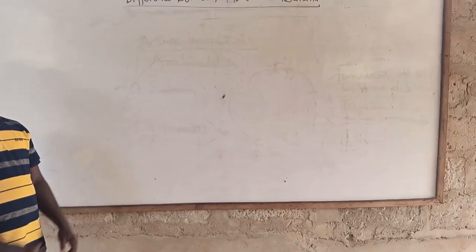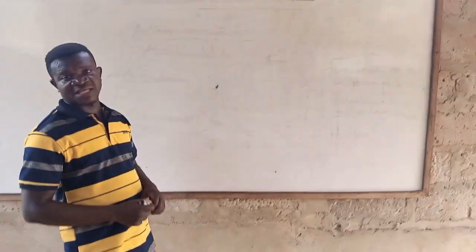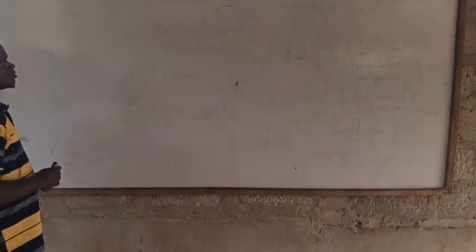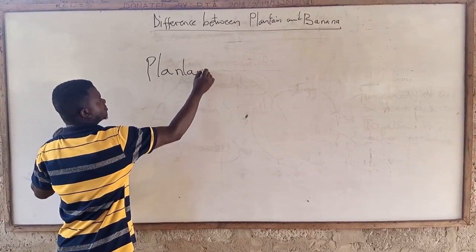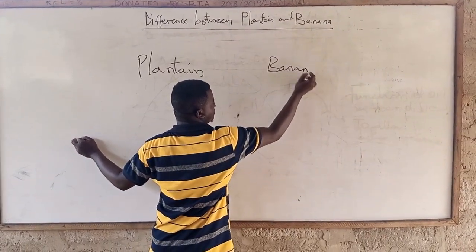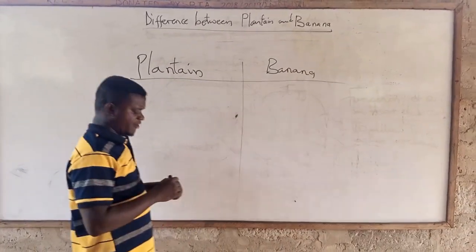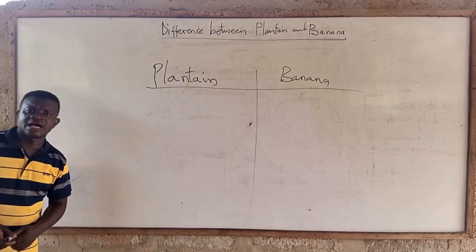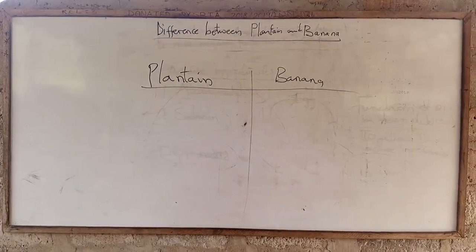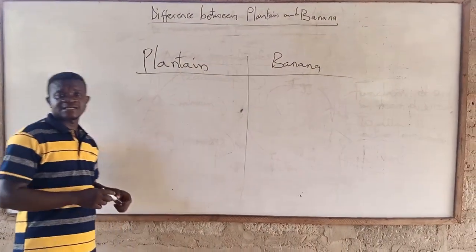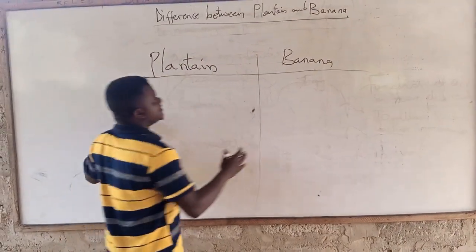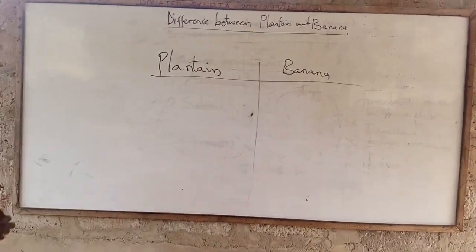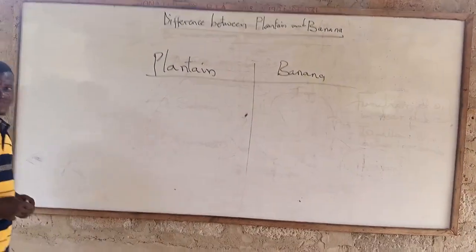The differences range from morphological characteristics to genetic constitution. Both the plantain and banana belong to the genus Musa — they are called either Musa sapientum or Musa paradisaca. They are within the Musa genus. Their morphological characteristics are very close because they all originated from Asia.